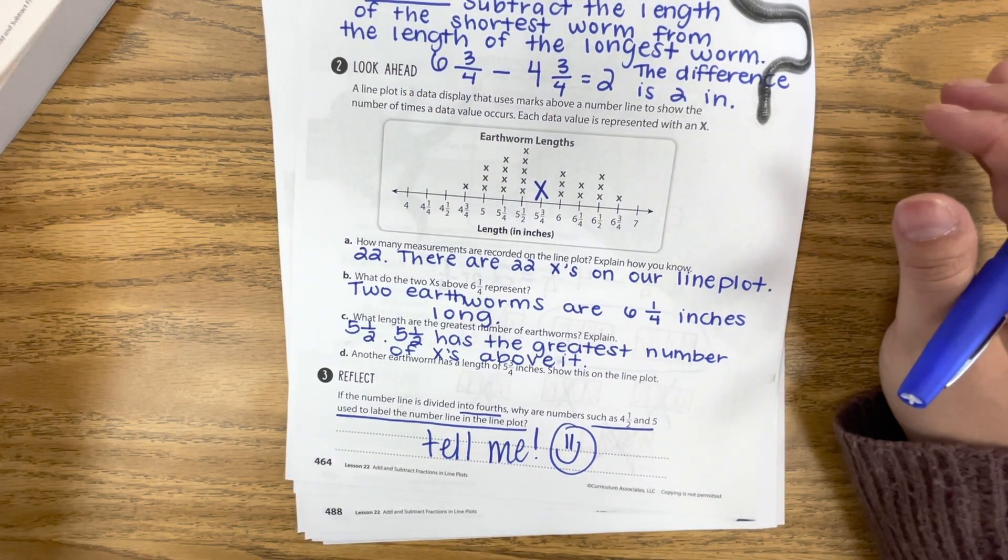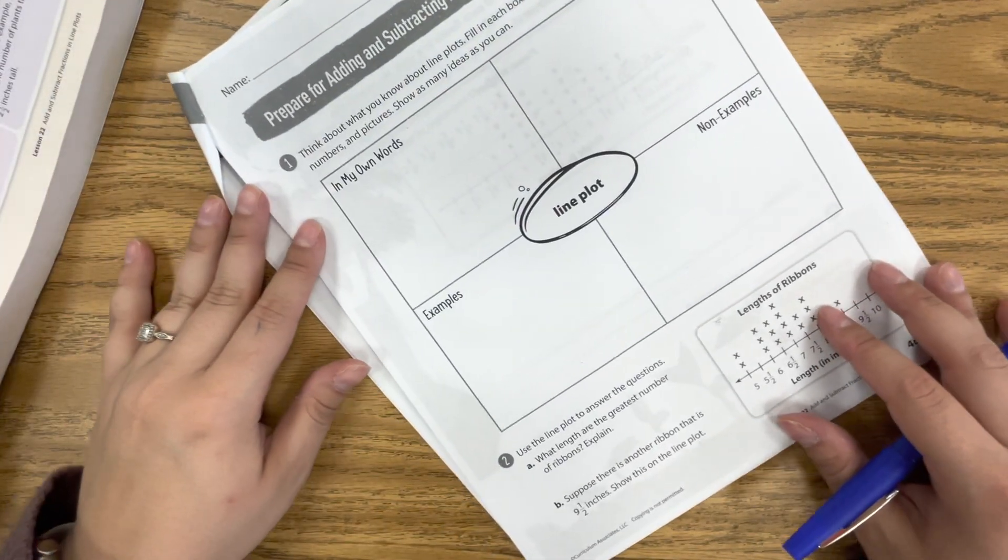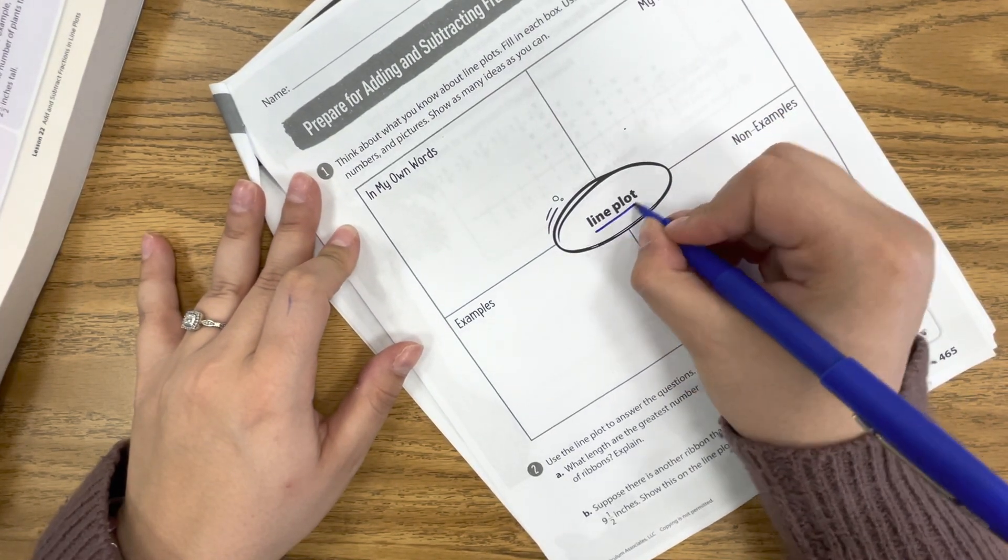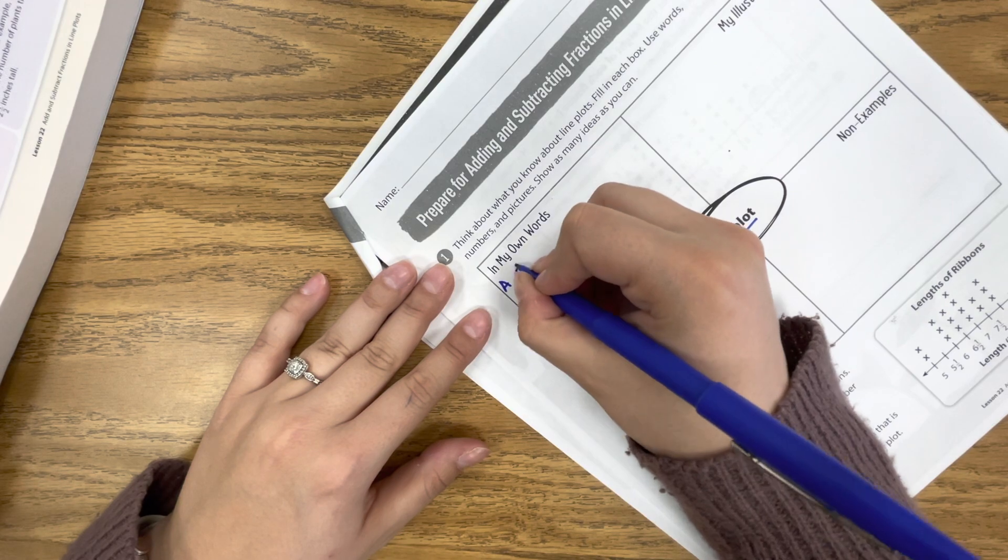And then we have one more page to do today, page 465. We have a vocabulary word we have to focus on with this lesson. And our word is line plot.